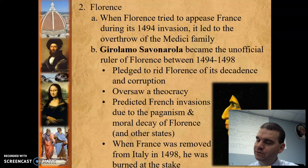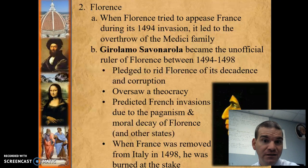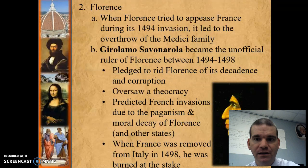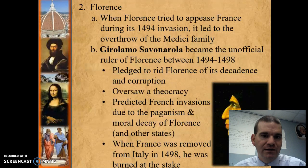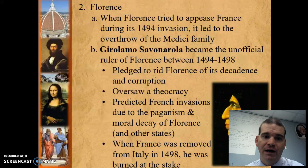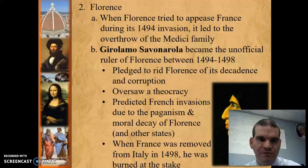Savonarola predicted the French invasion, so people looked at him as a sort of prophet, and he was put in charge to rid Florence of the ills of society. He was very harsh — he had almost spies sent in, and all they had to do was say someone was doing something wrong, and that person would be executed on the spot. But when France was finally removed from Italy in 1498, the Medicis were put back into power, and Savonarola was burned at the stake.